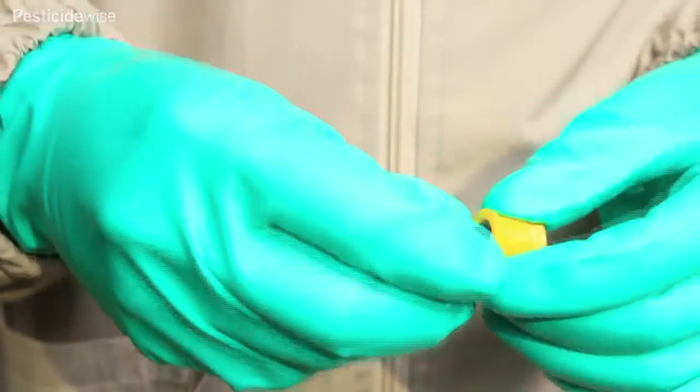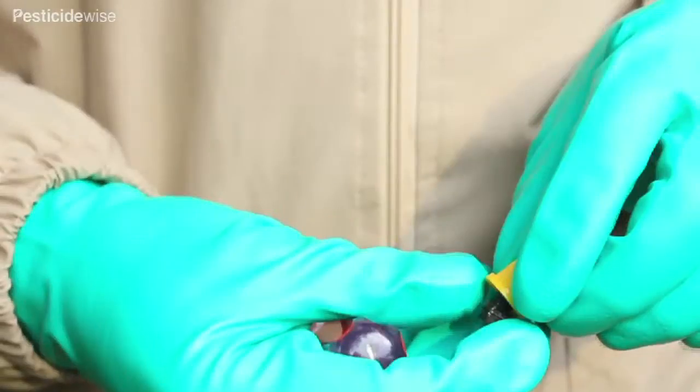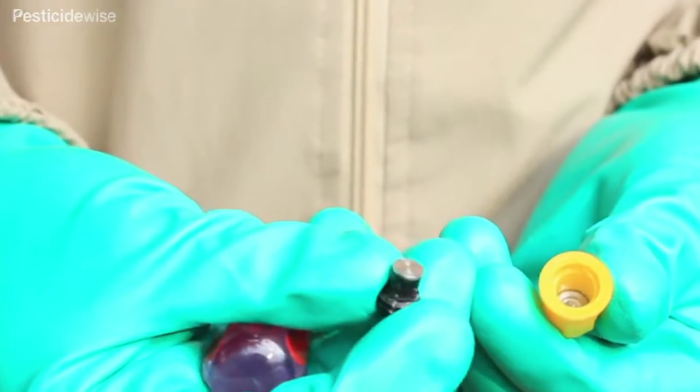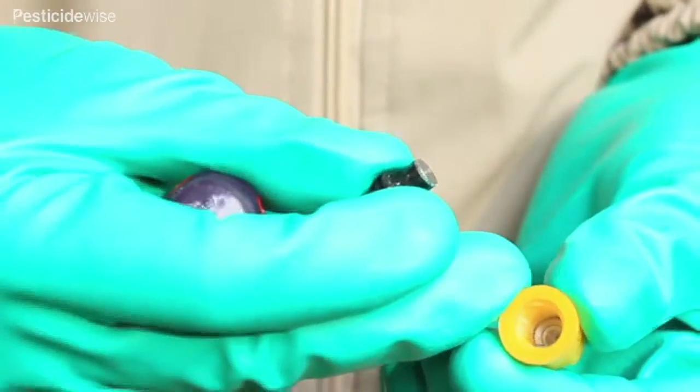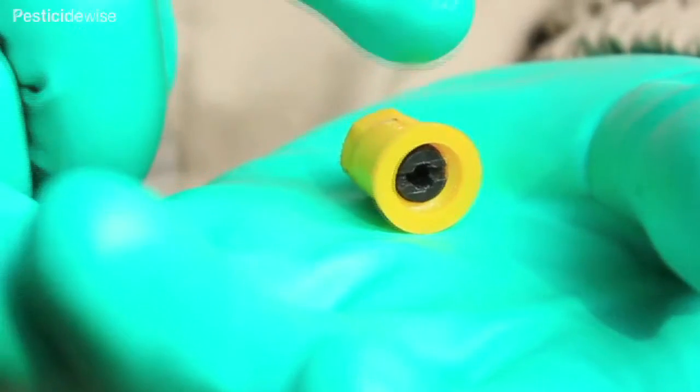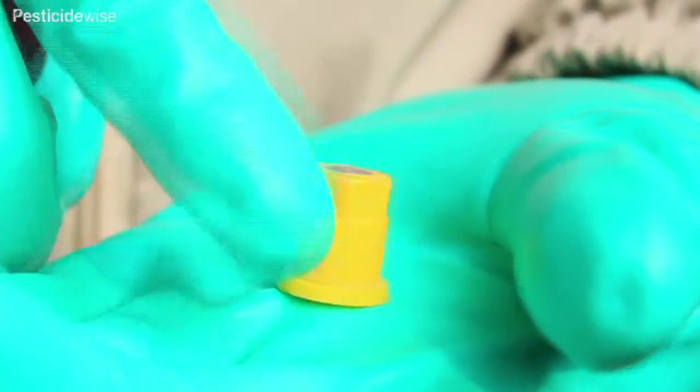Cone nozzles are in two parts. Each part can be disc-shaped with holes. This restrictor disc controls the flow of spray solution from the nozzle, and the second disc causes that liquid to form spray drops. These two parts click together to form one nozzle for fitting.